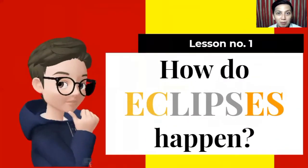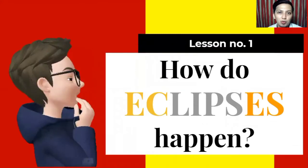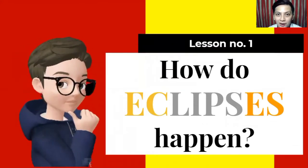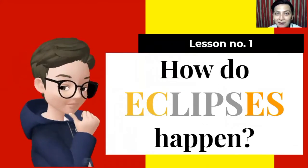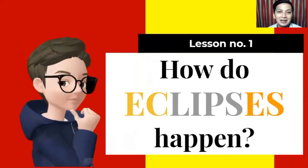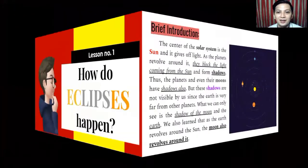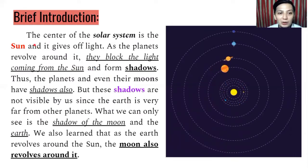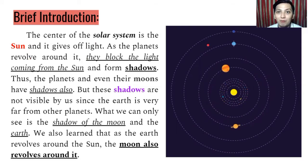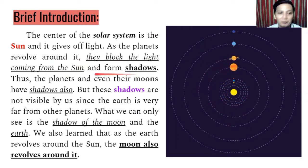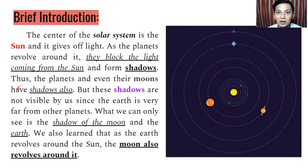For Lesson Number 1, we are going to broaden and extend your knowledge about how eclipses happen. As a brief introduction, we know that the center of the solar system is the sun and it gives off light as the planets revolve around it. They block the light coming from the sun and form shadows. Thus, the planets and even their moons have shadows also.